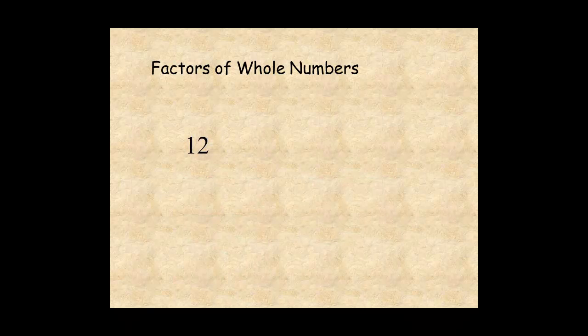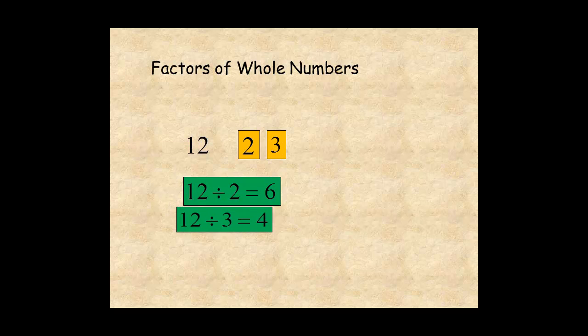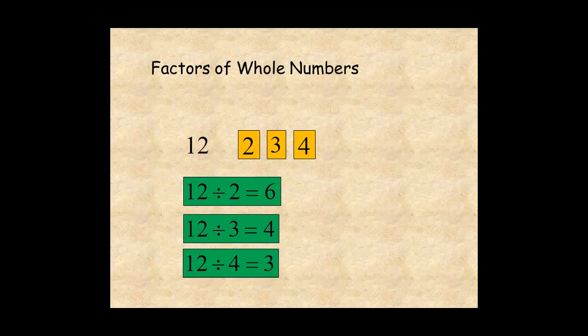To find the factors of a number, think of all the numbers that divide into it. You can use the divisibility rules you learned about in a previous lesson. For the number 12, 12 is divisible by 2, 12 is divisible by 3, 12 is divisible by 4, and 12 is divisible by 6.